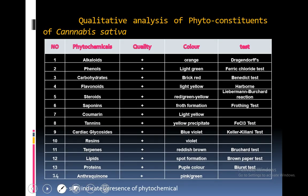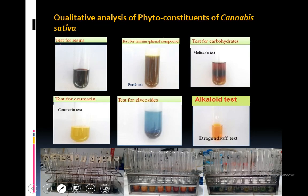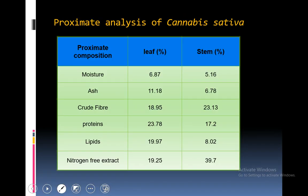Qualitative analysis of phytoconstituents — presence or absence of alkaloids, phenols, carbohydrates, flavonoids, steroids, etc. — was performed and is shown in the table, where positives indicate presence of phytochemicals. Qualitative analysis also included testing for resins, carbohydrates, alkaloids, glycosides and coumarins. Proximate analysis of Cannabis sativa essential oil was performed: moisture, ash, crude protein, lipids, and nitrogen-free extract percentage were found in leaf and stem. Maximum percentage of proteins was found in leaves as well as in stem, whereas crude fiber is mostly present in stem. Nitrogen-free extract was found highest in stem at 39.7%.